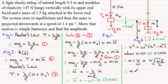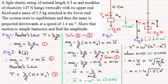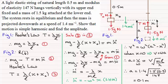Substituting the values: A = 1.4 × √(1.5 × 0.5 / 147). Working that out gives exactly 0.1 meters. So the amplitude is 0.1 meters. I hope that's given you some idea about the methods you can use when dealing with problems like this.